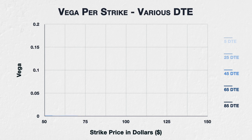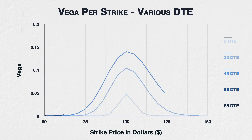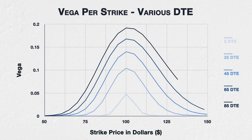This chart shows the vega for all options of a fictional asset with a current price of $100, implied volatility of 40%, and varying days to expiry. The strikes range from $50 to $150, and the days to expiry ranges from 5 up to 85.